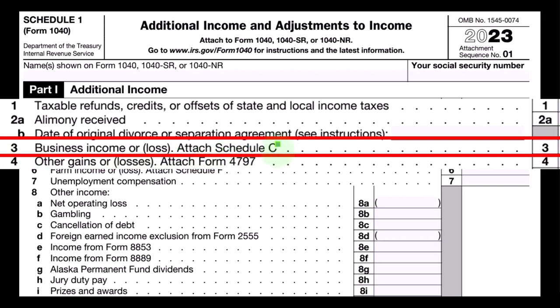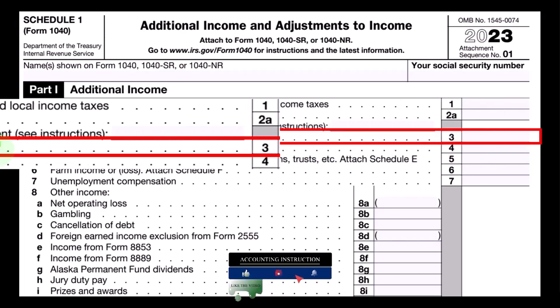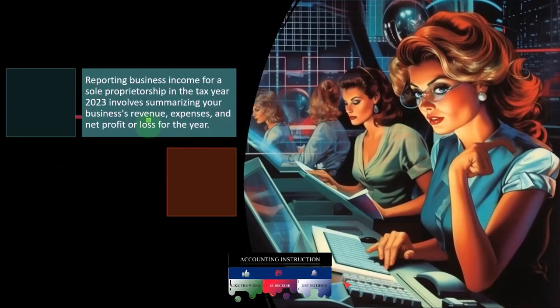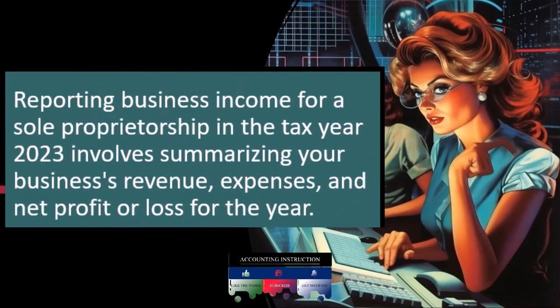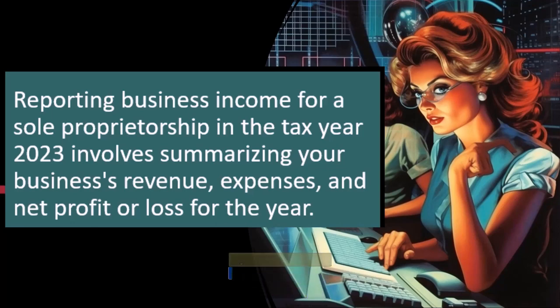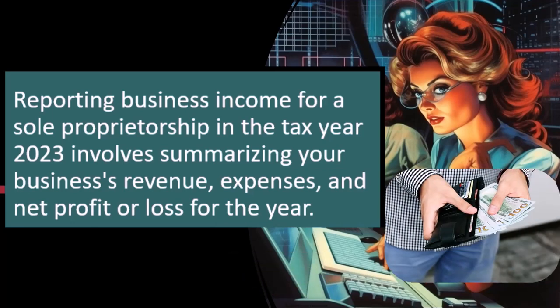Business income or loss will typically flow in from another schedule — a Schedule C — which is essentially an income statement for the business. We're looking at reporting business income for a sole proprietorship in tax year 2023, which involves summarizing your business's revenue, expenses, and net profit or loss for the year.